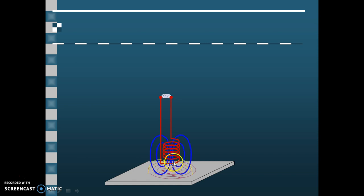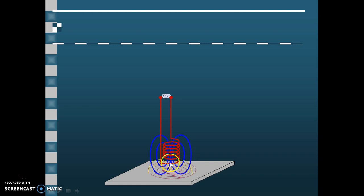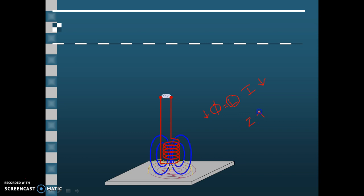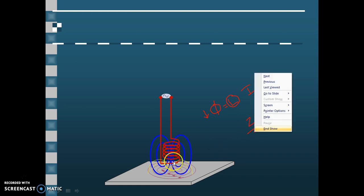The electromagnetic field generated by the eddy current will oppose the electromagnetic field produced by the coil, because we know this concept from Lenz's law. Because of the superimposition of the two opposing fields, the overall flux phi of this system will decrease. We know phi equals L times I. As phi decreases and L is constant for this coil, I will also decrease, and decrease in I means increase in Z, or increment of the impedance value of this coil.